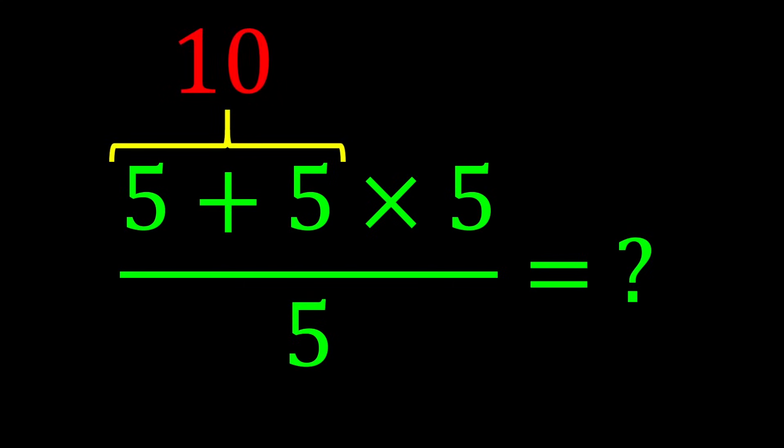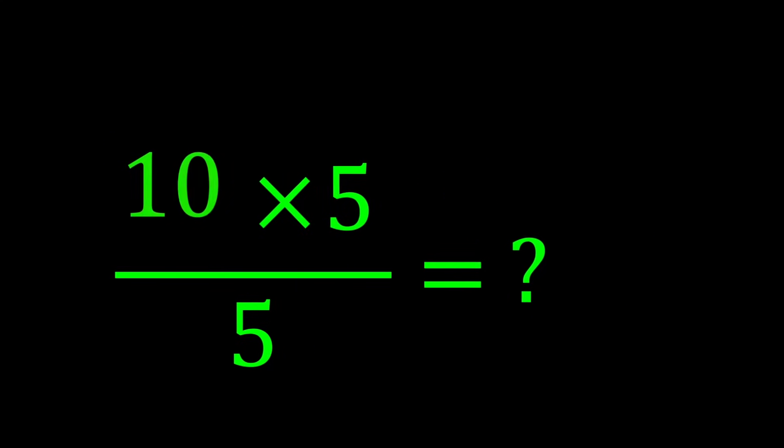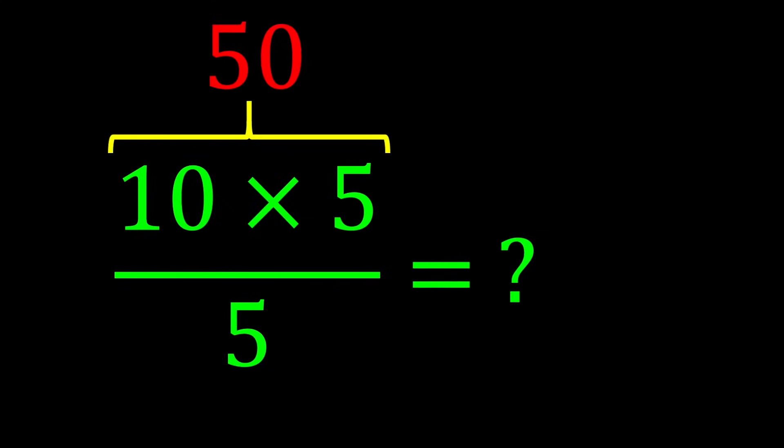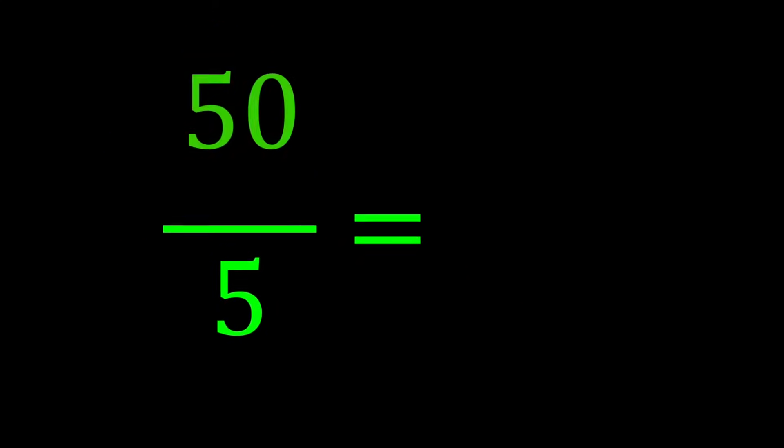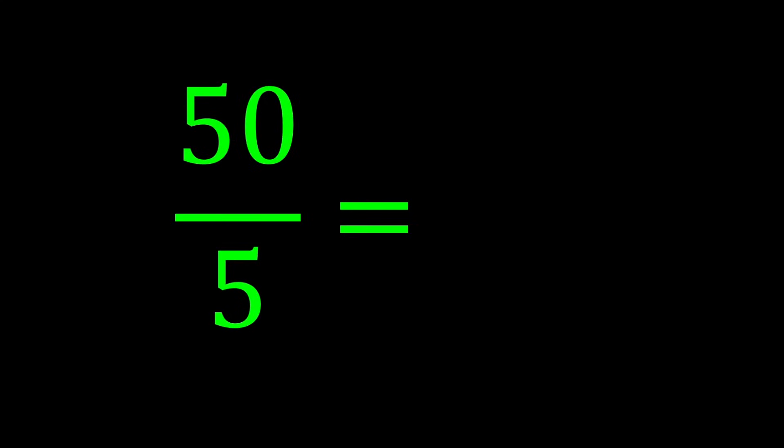5 plus 5 gives us 10. Then 10 multiplied by 5 gives us 50. Finally, 50 divided by 5 gives us 10.